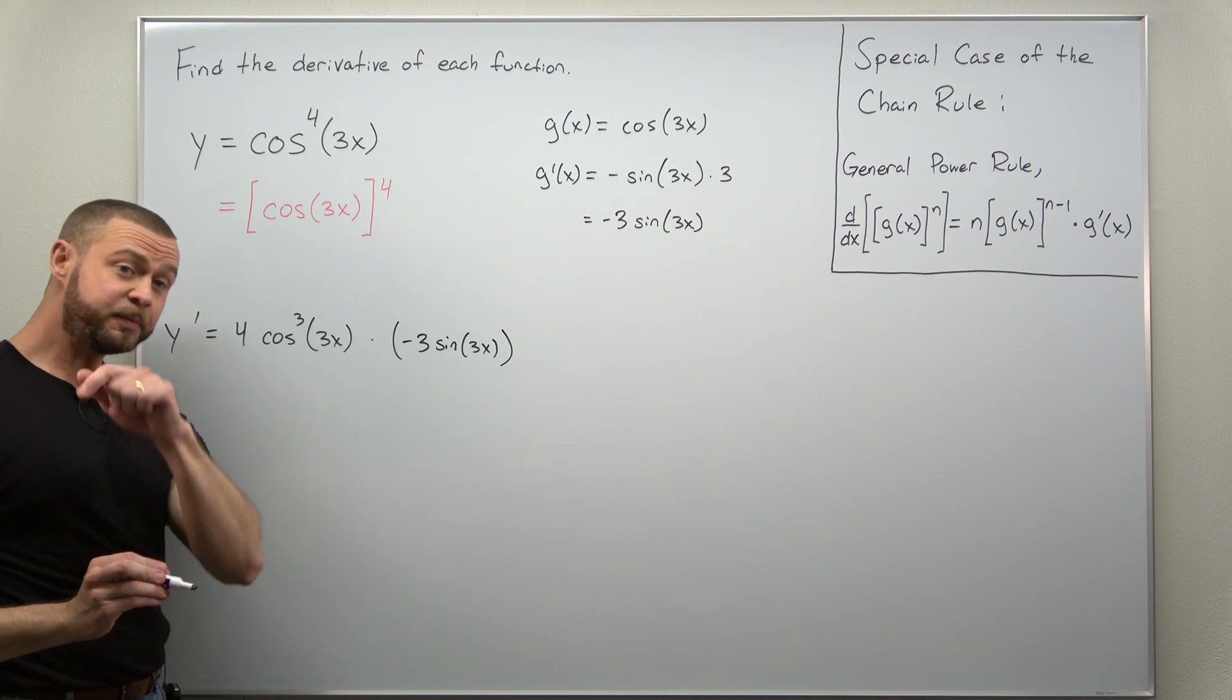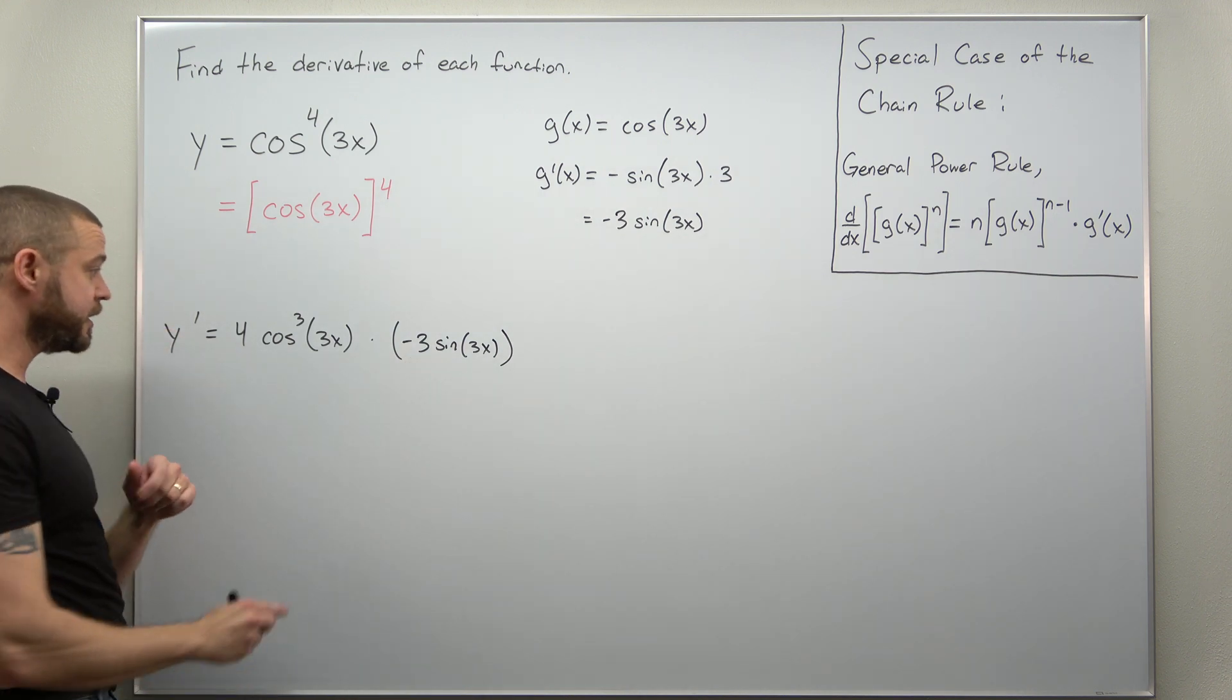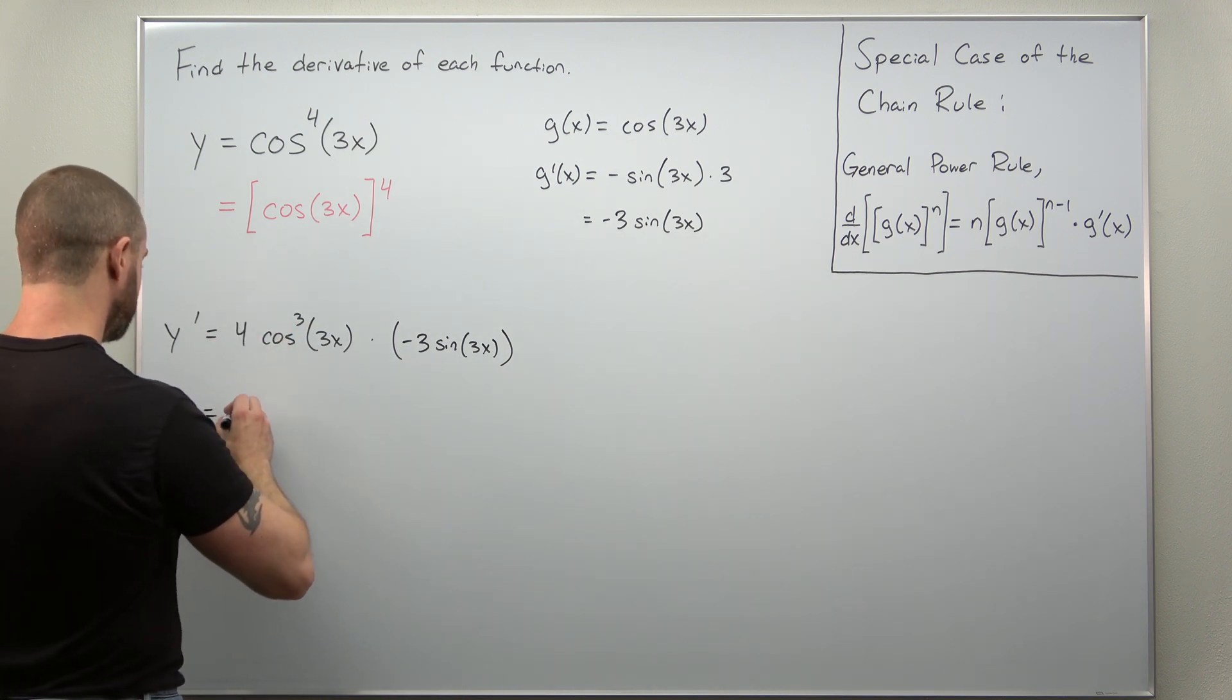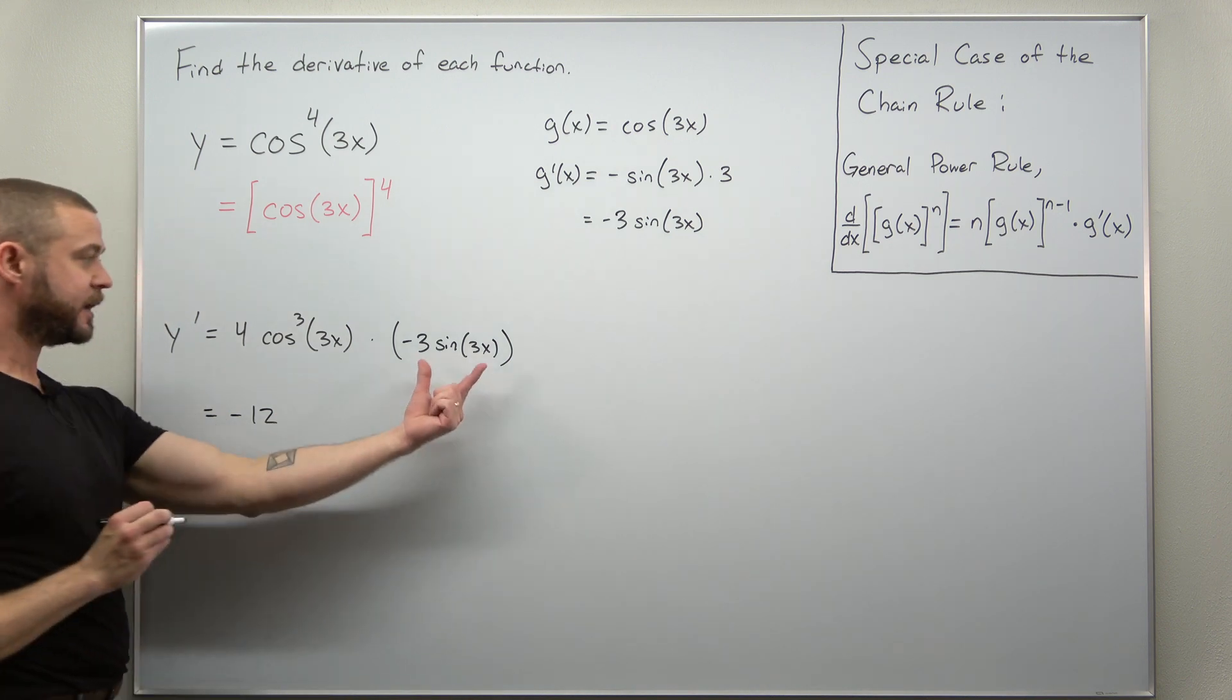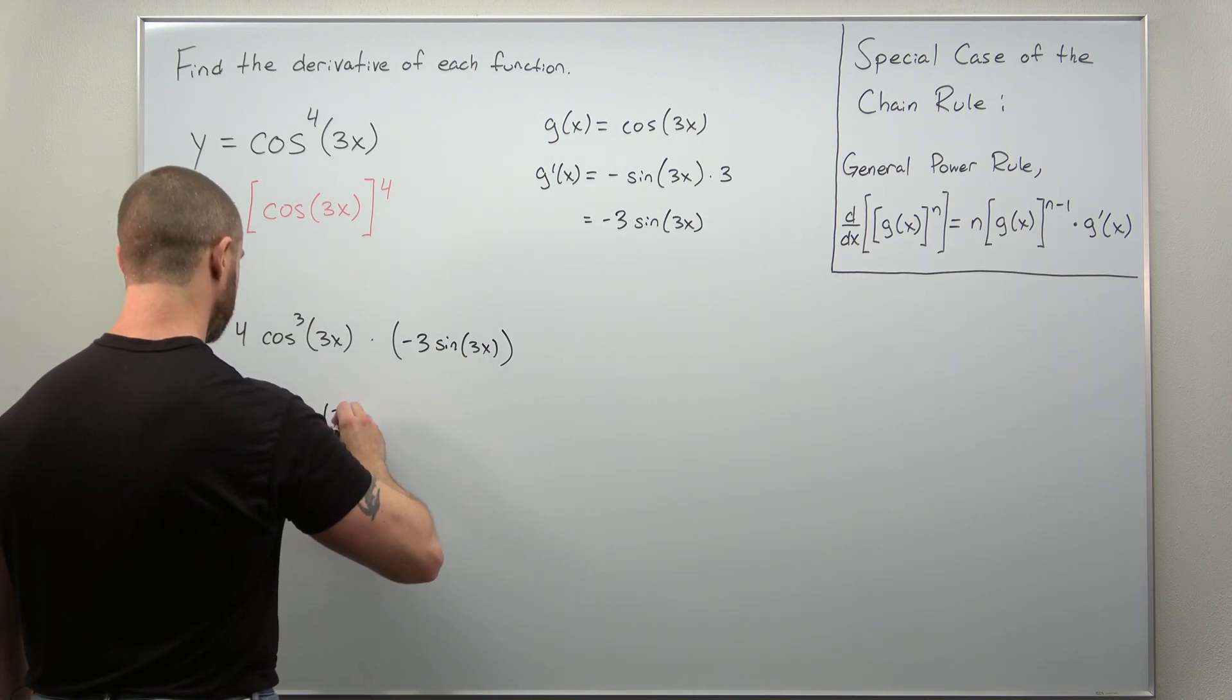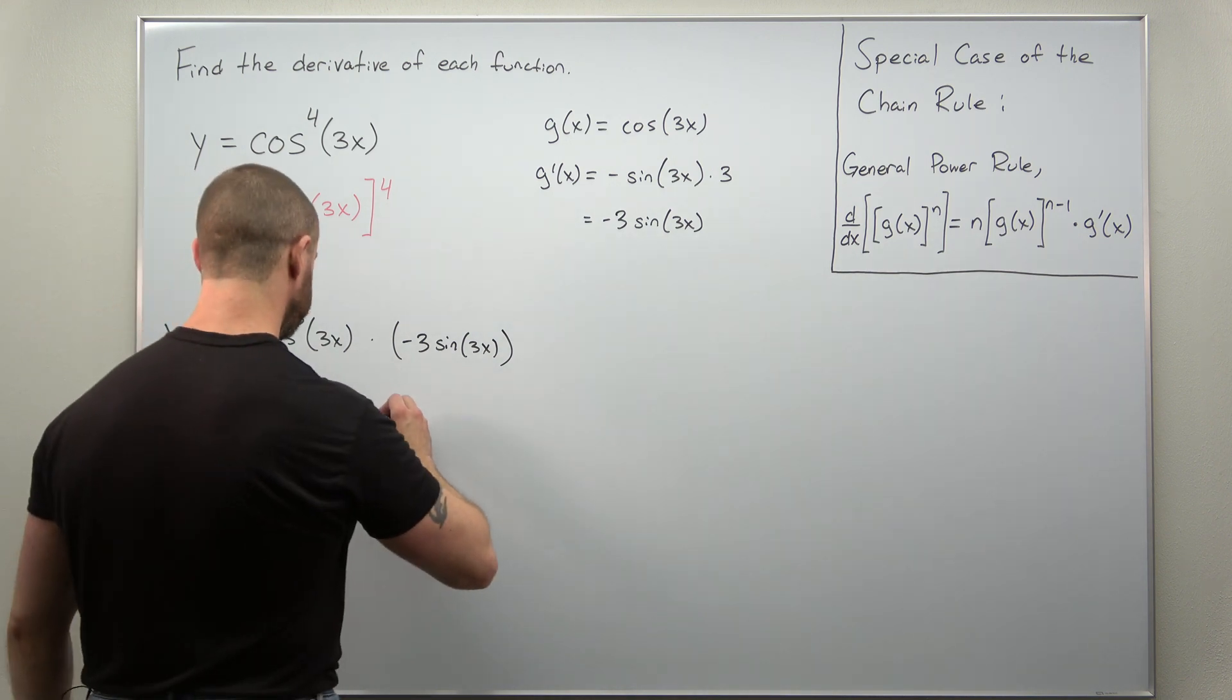You can clean this up and simplify it a little bit. Notice we're multiplying there. We can switch the order here. And we can take the 4 and negative 3, multiply them together to get negative 12. We can take our factor sine of 3x in front. And then we have our factor of cosine cubed of 3x.